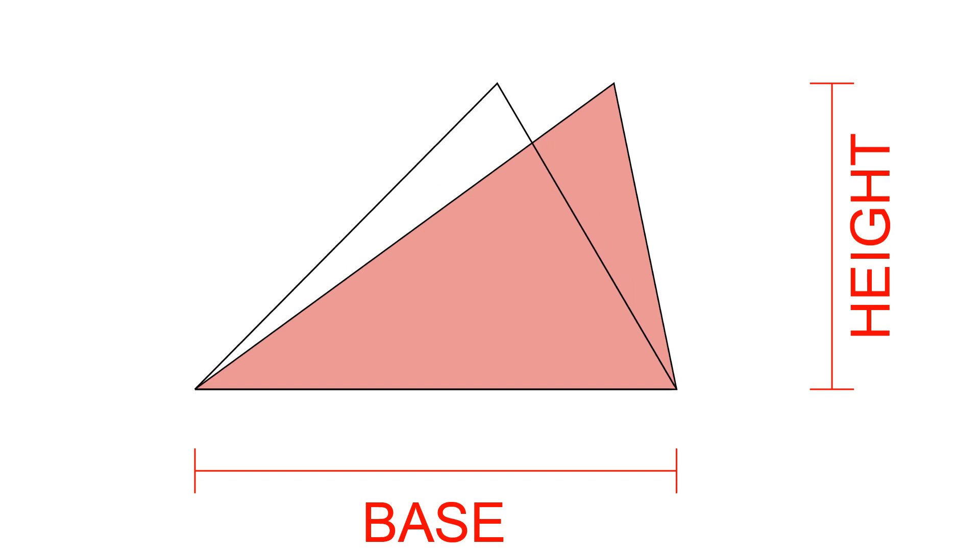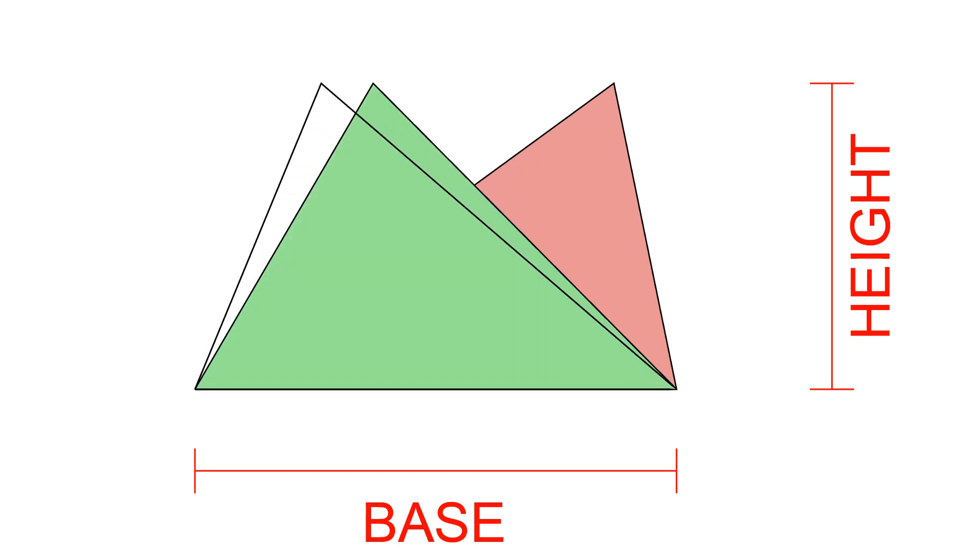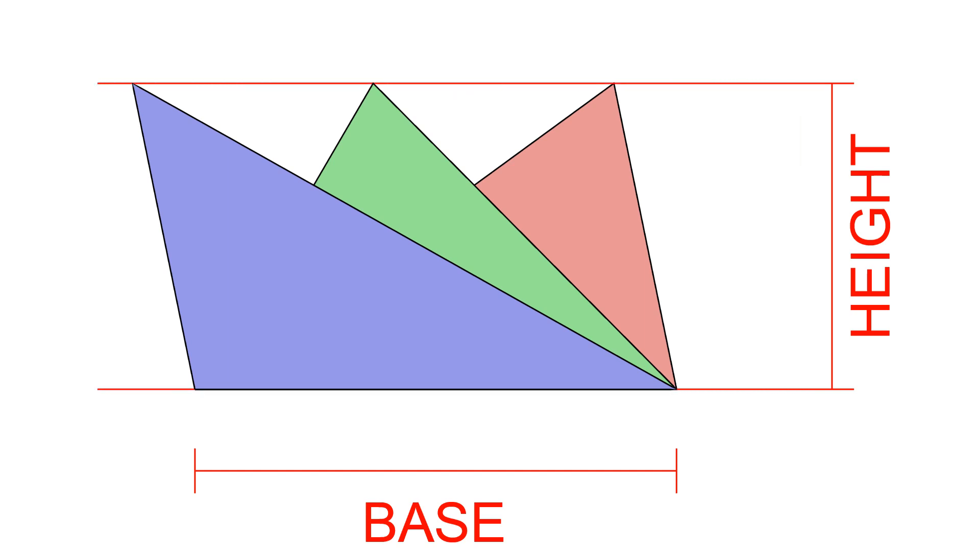Consider the red, green, and blue triangles, for example. They all have the same area because they have the same base and the same height.